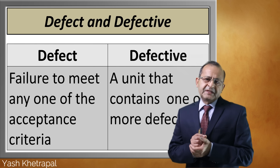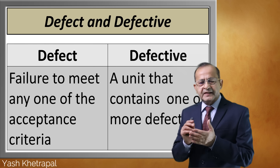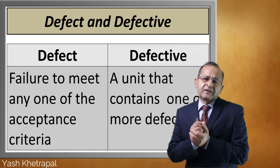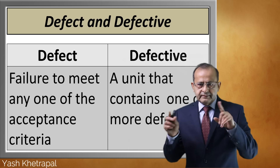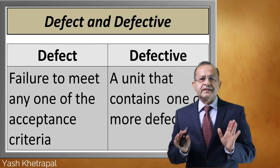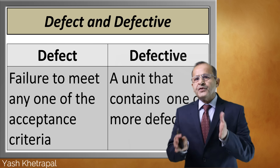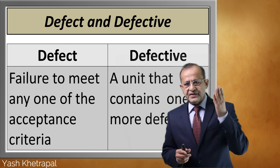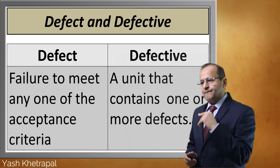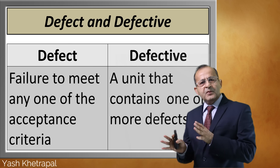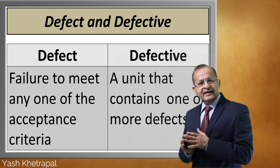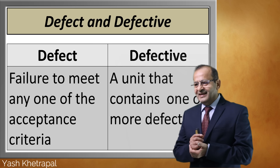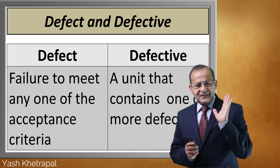Precisely speaking, what is a defect? Failure to meet any one of the acceptance criteria — the acceptance criteria laid out by the customer. If you are not meeting anyone of them, it's a defect. A defective is a unit, a component, or an assembly that has one or more defects.